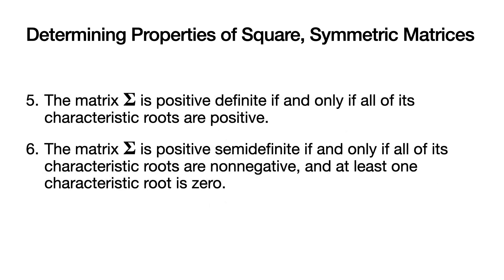The fifth result tells us that the matrix CAP-SIGMA is positive definite if and only if all of its characteristic roots are positive. That makes it very easy to determine whether a square symmetric matrix is positive definite — all we have to do is determine what the characteristic roots are using software or a calculator and check whether they're all positive. The sixth result tells us that CAP-SIGMA is positive semi-definite if and only if all of its characteristic roots are non-negative and at least one of them is exactly equal to zero.